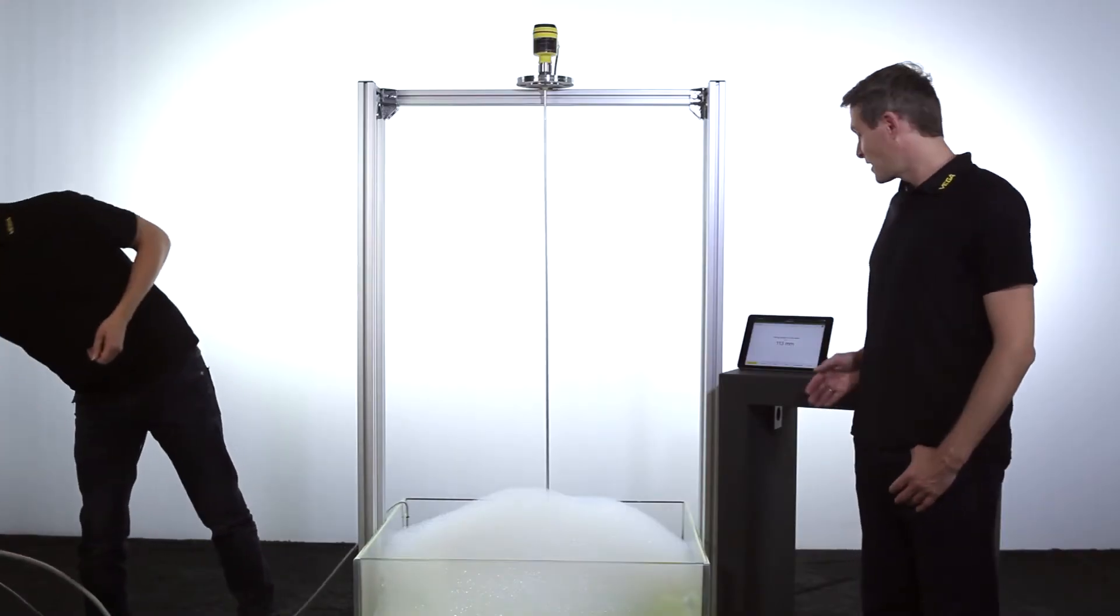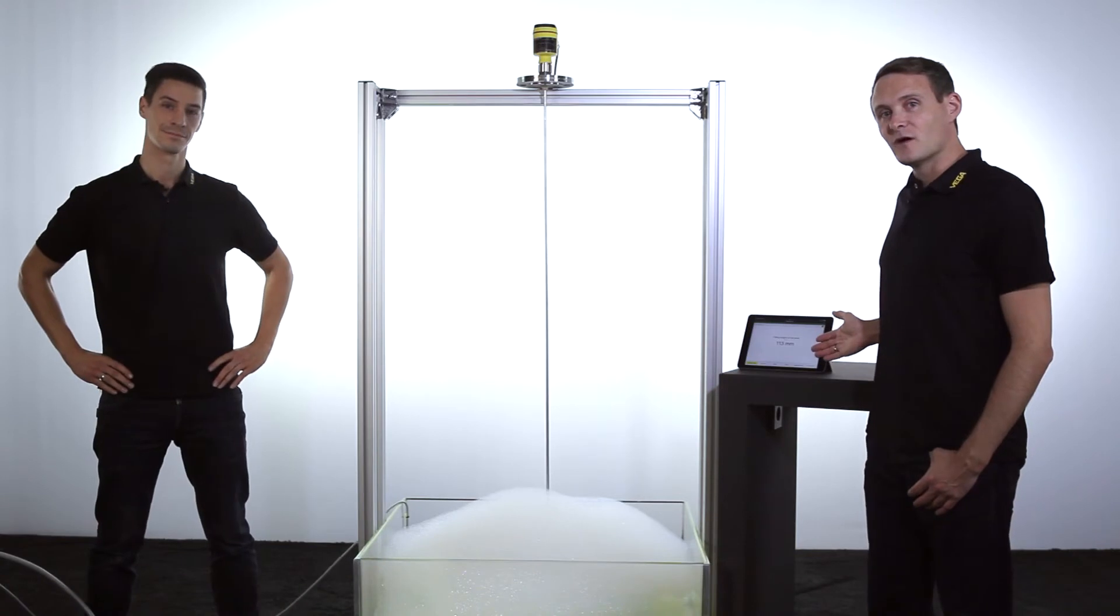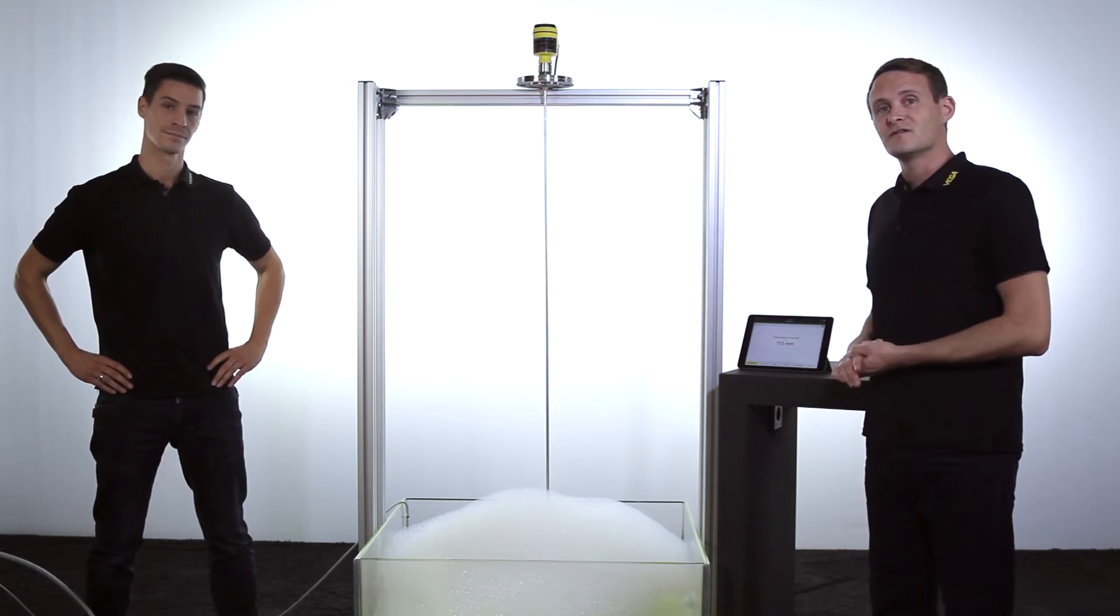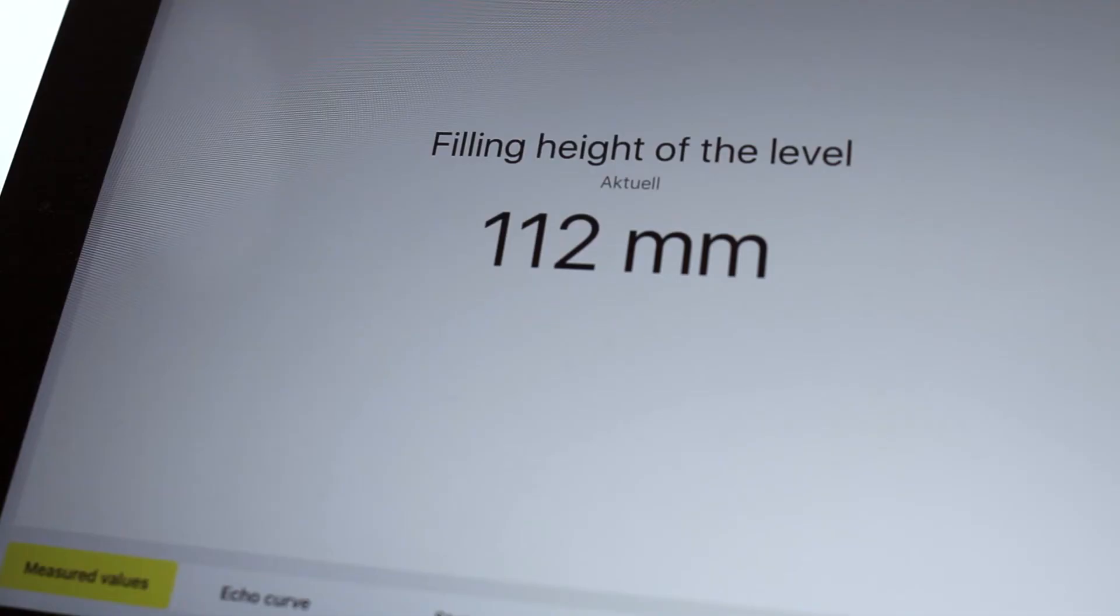You can see now on the display the measured value is only changing by a few millimeters, although we have a very thick layer of foam. So we measure really down through the foam to the level and the measurement is virtually unaffected by the foam.